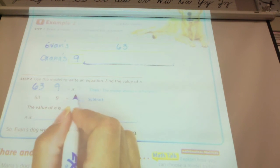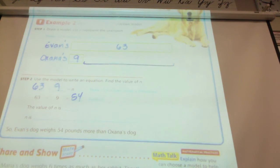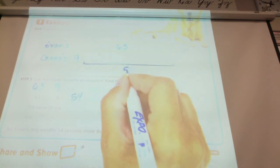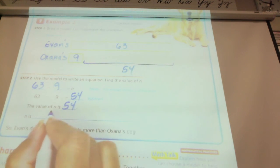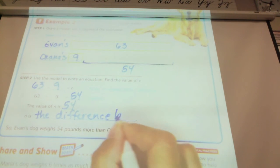54. 54. So, the value of N is 54. So, N is the difference between the two dogs.